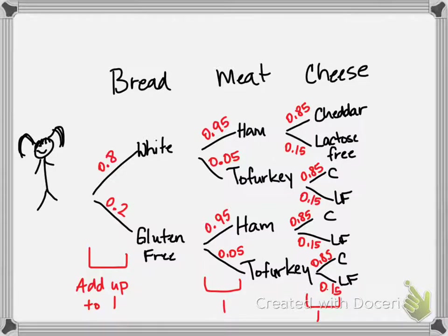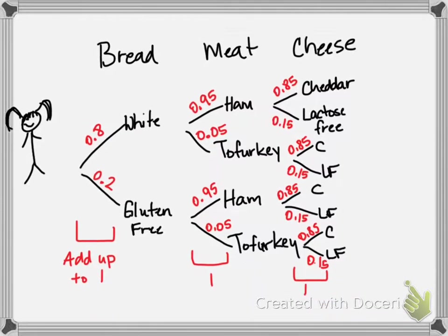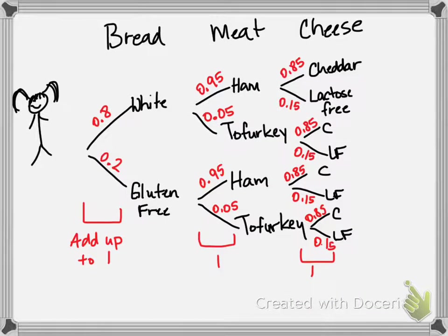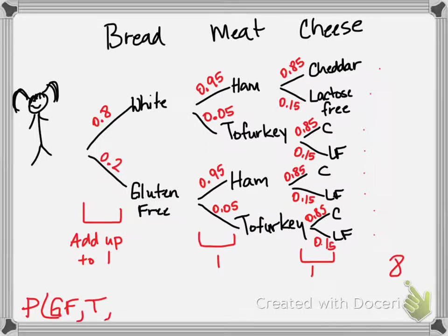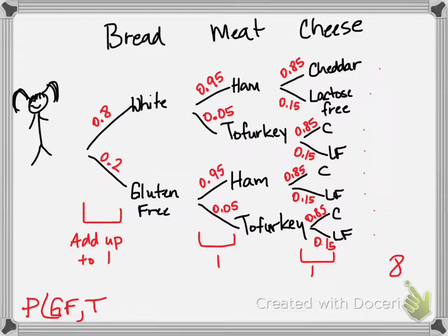Back when we did weighted averages, we multiplied the weight times the grade. For probabilities, we're going to multiply across the branches. There are eight possible combinations in total, but if you wanted to know the probability of gluten-free, tofurkey, and lactose-free cheese - that would be one out of eight if everything were equally likely. But we're not equally likely to choose those options, so we need to reflect that - that's not how this works.